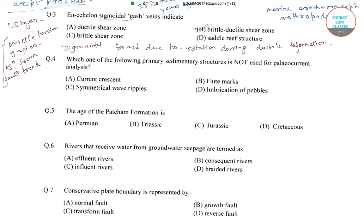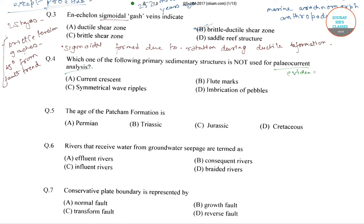Question four asks: which of the following primary sedimentary structures is not used for paleocurrent analysis? Paleocurrent analysis is the analysis of paleocurrent indicators, which are evidence for the direction of flow at the time of sedimentation.